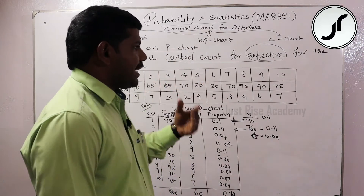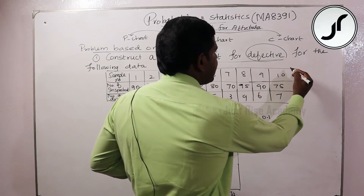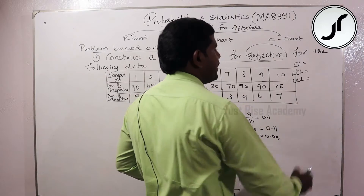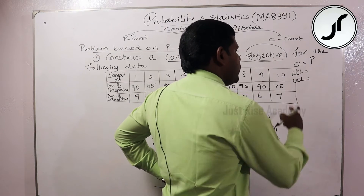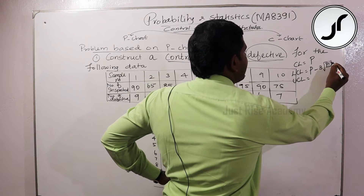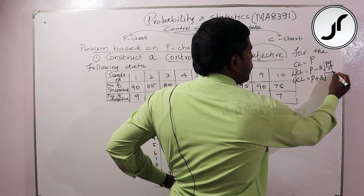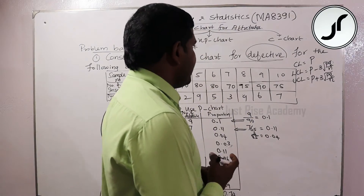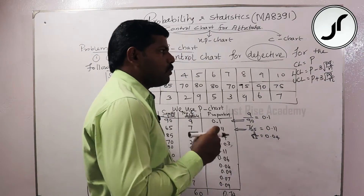To construct the P chart, we need the center line, lower control limit, and upper control limit. The center line is p-bar. The lower control limit (LCL) = p-bar minus 3 times the square root of (p-bar × q) divided by n. The upper control limit (UCL) = p-bar plus 3 times the square root of (p-bar × q) divided by n. We need the values of p-bar, q, and n.